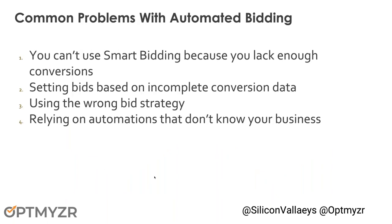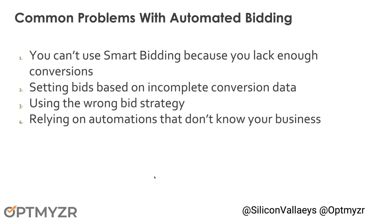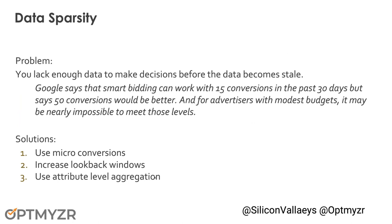Now, a couple of common problems. You can't use smart bidding because you lack enough conversions — that may be fairly common if you have a smaller account. You might be setting bids based on incomplete conversion data, which is bad. You might be using the wrong bid strategy — Google gives you eight options, and if you don't understand the nuances between them, you might actually pick one that's not ideal for you. And finally, relying on automations that don't necessarily know exactly what your business is all about.